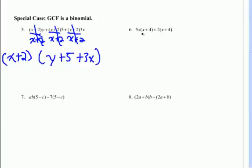Over here, you can see they both have an x plus 4 in common, so I can factor that out and divide each term by x plus 4. The x plus 4s cancel out, and what's left over is 5x plus 2.